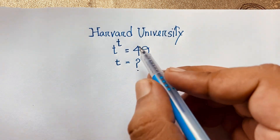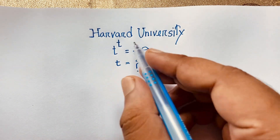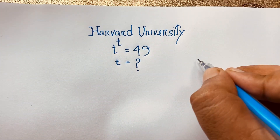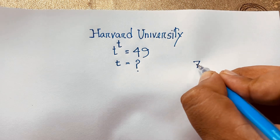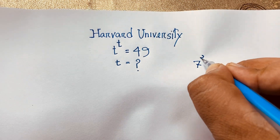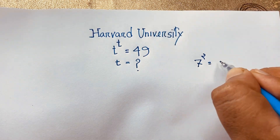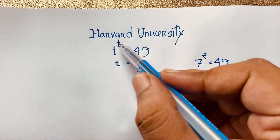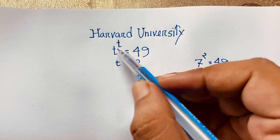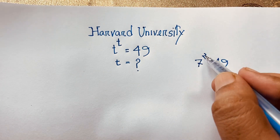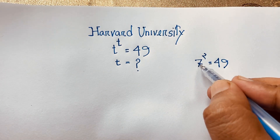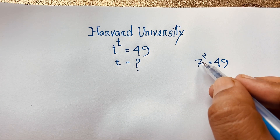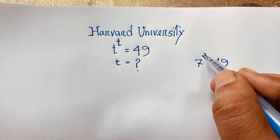First of all, t to the power t. Note that here is 49, so it will be 7 to the power 2, which equals 49. But look here — in t to the power t, both are the same, but here the base and exponent are not the same: this is 7, this is 2. So we need the base and exponent to be the same.